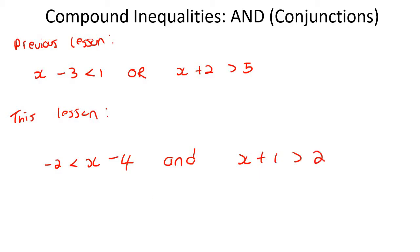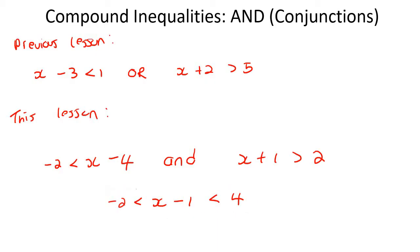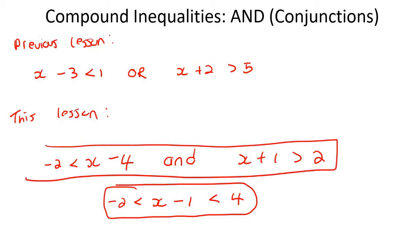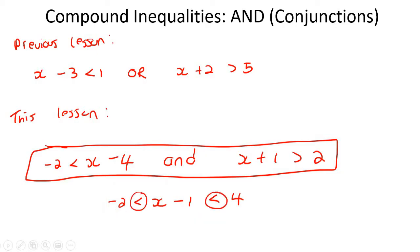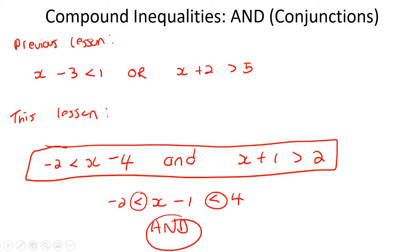The other way they could ask an 'and' question is when it goes all in one expression — like x minus 1 is smaller than 4, and they sort of do all of it in one. So these are the two different ways we are going to see in this lesson. Whereas with 'or', they only have one way to show that. When they link it all up into one thing where you've got two inequality signs, that actually stands for 'and'.